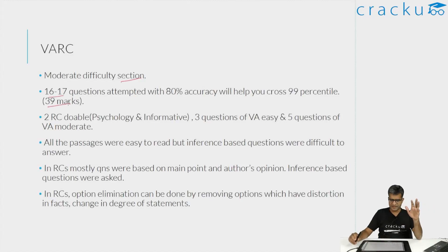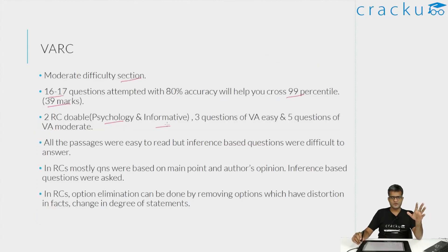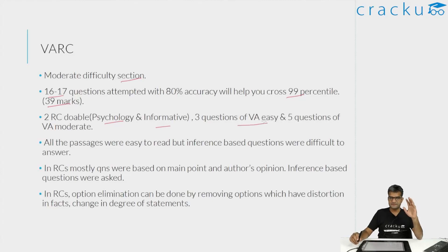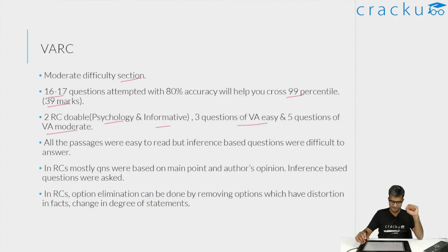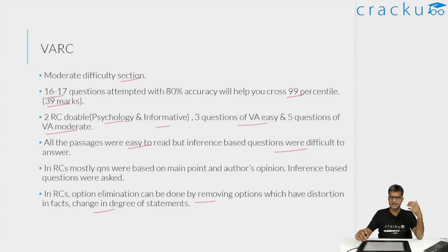Around 39 to 40 marks will get you 99 percentile in verbal. There were two RCs which are doable — the psychology one and the informative one. Even the fourth one was manageable. There were three questions in VA which were easy — both para jumbles and para insertions were on the easy side, so out of those four you can get at least three correct. Five questions of VA were of moderate difficulty, especially the para summary. Option elimination normally increases your accuracy — that is what I always do in verbal, especially in RCs. Whenever I am able to eliminate an option, my expected score increases.